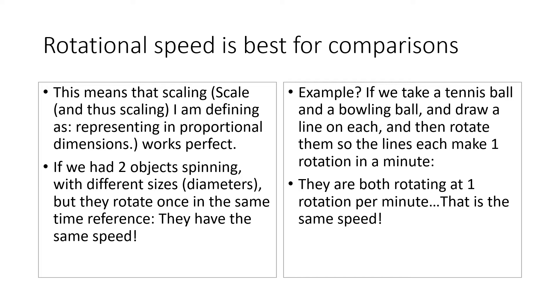If we take a tennis ball and a bowling ball, and draw a line on each, and then rotate them so the lines each make one rotation in a minute, they are both rotating at one rotation per minute. That is the same speed.